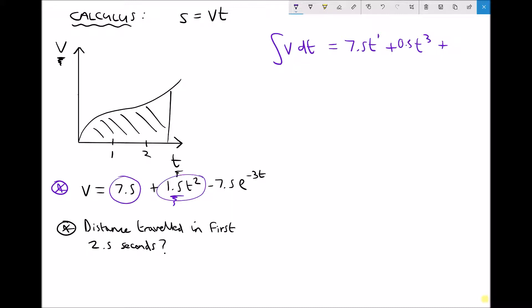And finally we have our exponential to integrate. Well when we integrate the exponential, we need to divide the coefficient of the function by the coefficient of the exponential power of t. So minus 7.5 divided by minus 3 equals 2.5. So we have 2.5e to the minus 3t. The power of the exponential remains the same.